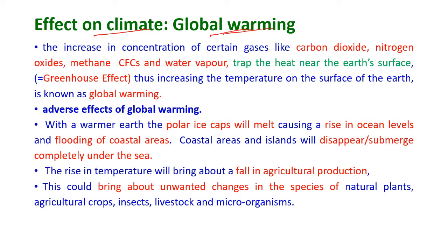Effects on climate — global warming: the increase in the concentration of certain gases like carbon dioxide, nitrogen oxides, methane, CFCs, and water vapor traps heat near the earth's surface, which is known as the greenhouse effect. The resulting increase in temperature on the surface of the earth is known as global warming. These gases, called greenhouse gases, trap heat above the earth's surface, causing temperatures to rise.